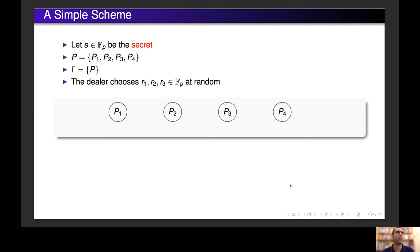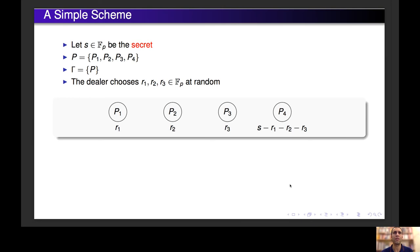Now we will see a simple secret sharing scheme that will be useful to introduce some notation. Consider a case where we have a secret from a finite field. We have four participants and we want to share the secret in such a way that the only authorized subset is P — all participants together can recover the secret, but any subset of size three or less cannot obtain any information about the secret. So the dealer can choose three random elements from the finite field and give one random element to each participant, except for the last participant who will receive S minus the sum of the random elements.